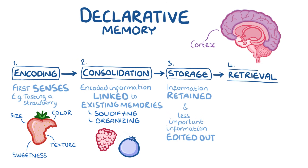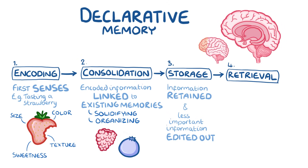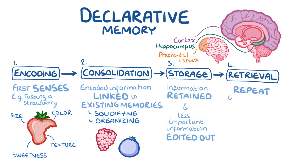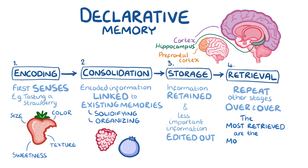The fourth stage is retrieval, and it occurs in the prefrontal cortex, hippocampus, and cortex. In retrieval, the brain goes through encoding, consolidation, and storage of the memory over and over again, and with each run through, retrieval gets easier. If you've ever tried to memorise facts for a test, you've gone through the process of retrieval — the more you run through that information, the more likely you'll be able to remember it on the test. The retrieval stage protects memories from being lost, and the oldest, most retrieved memories are the most resilient.